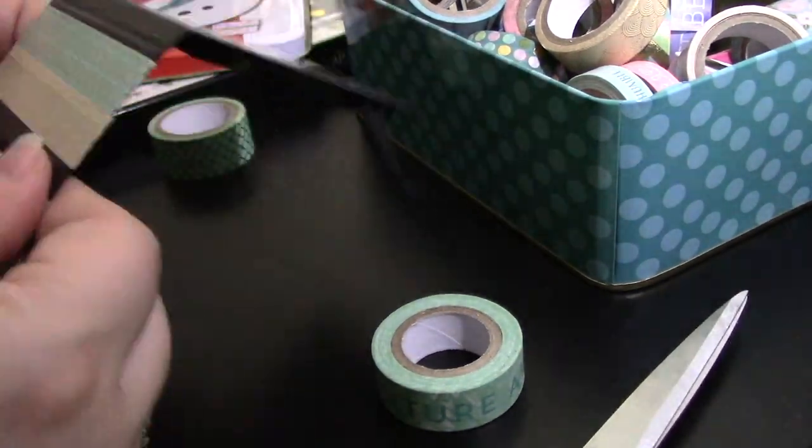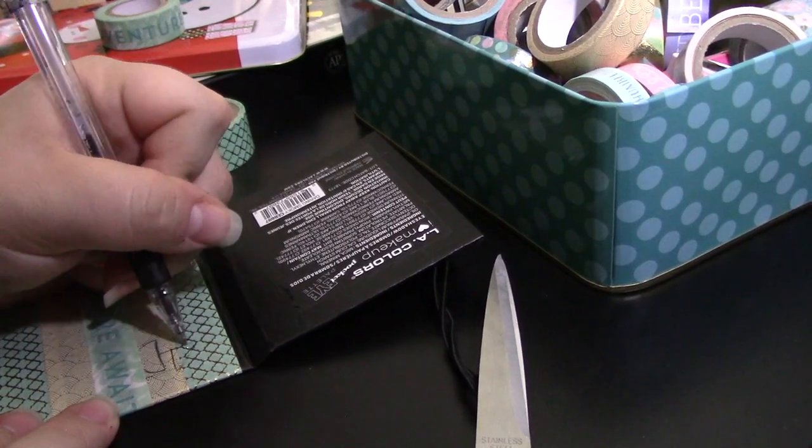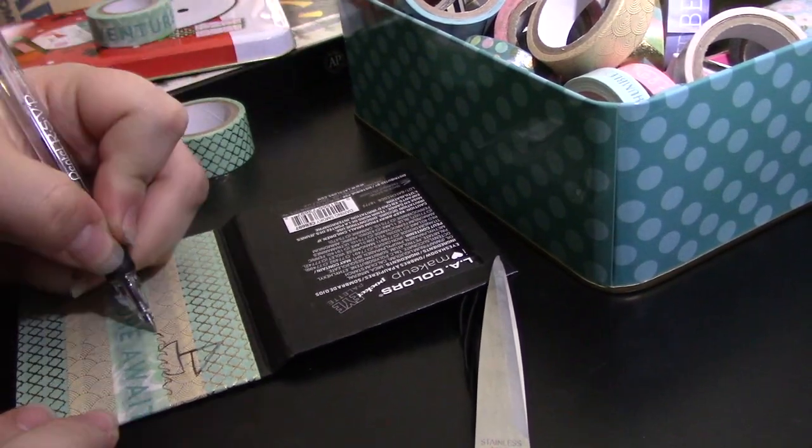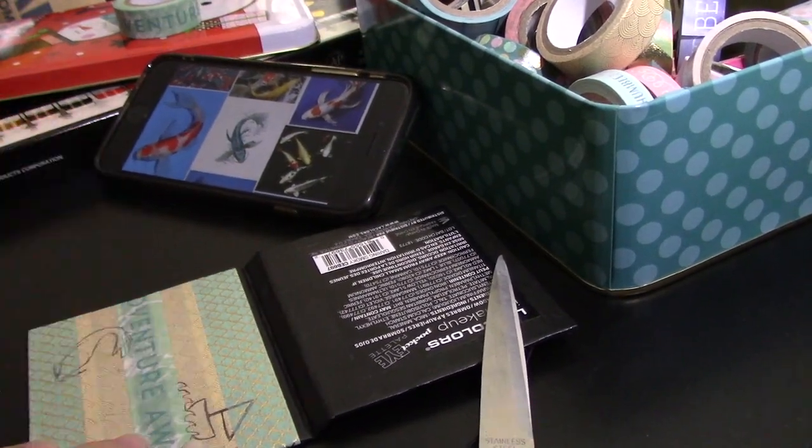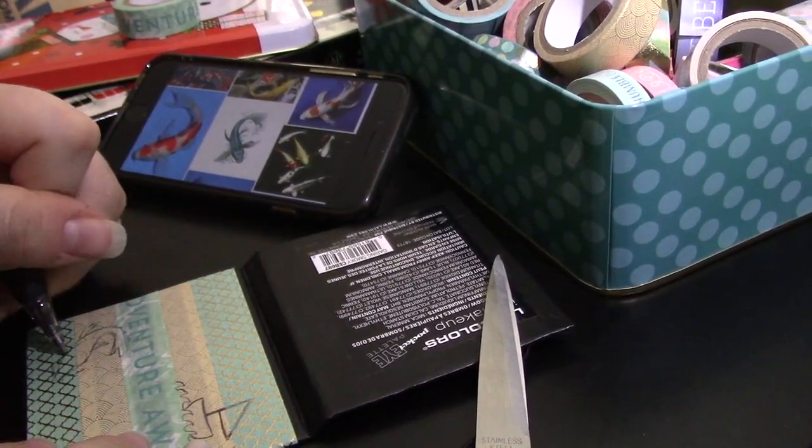Next step is decoration, and you can do this however you'd like, but my favorite method is just taking washi tape and wrapping it around the edges to help it stay, and maybe gluing some decorations on or drawing on top of the tape. This tape really resisted my pen, but it was fun to doodle on anyway.